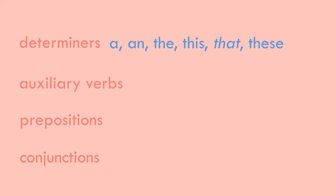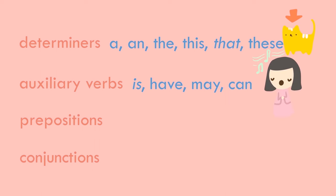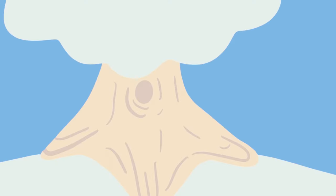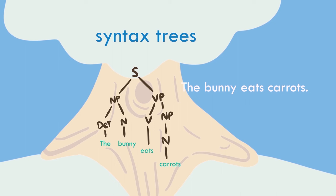A determiner is a word or affix that modifies a noun to express reference, like 'that cat.' An auxiliary verb modifies a verb to form tense or mood, like 'she is singing.' A preposition goes before a noun or pronoun to express a relation to another word or element in a sentence, like 'the bird near the window.' A conjunction is a word that connects clauses and sentences, like 'coffee and sugar.' To represent the syntactic structure of a sentence, we can create and interpret syntax trees, created using branches of noun, verb, and prepositional phrases.